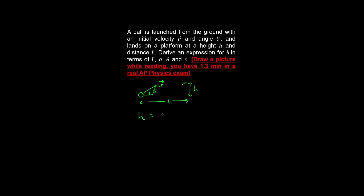h is equal to the vertical component of the initial velocity multiplied by time, minus gravity multiplied by time squared over two. And l is equal to the horizontal component of velocity multiplied by t, which implies that t is equal to l divided by v cosine theta.